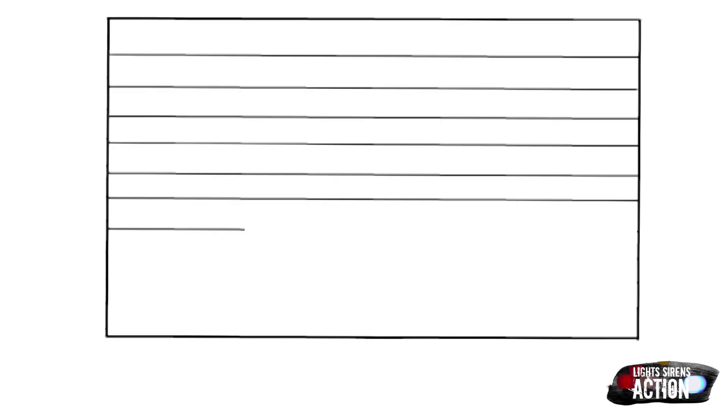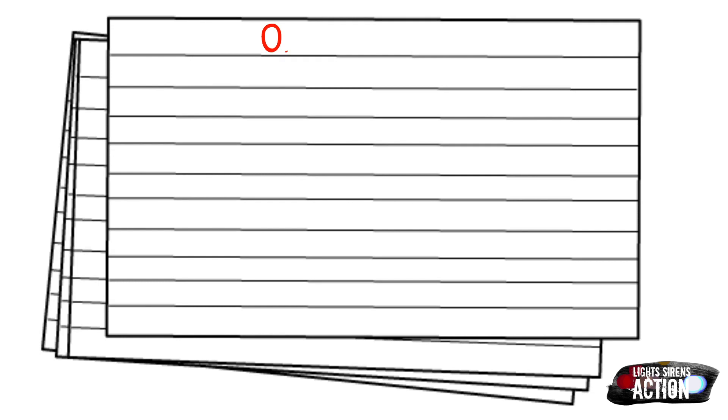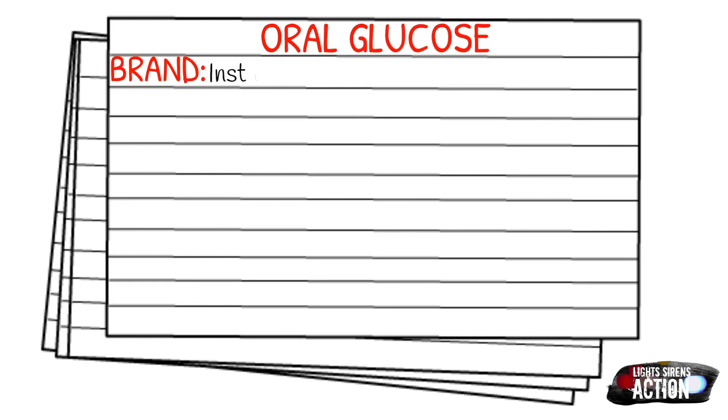Today's medication is called oral glucose. Oral glucose is also known by its brand names InstaGlucose or Glutose 15. It falls under the class of hyperglycemic agents, or anti-hypoglycemic agents, and carbohydrates.